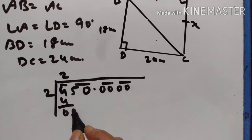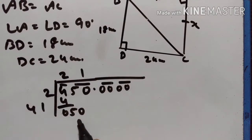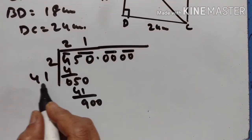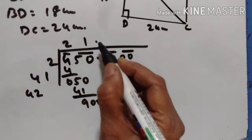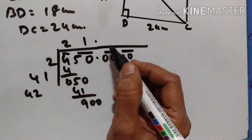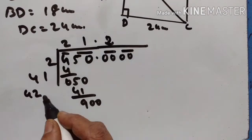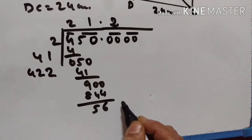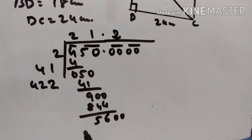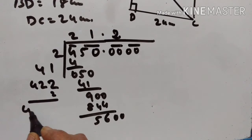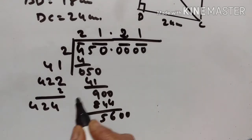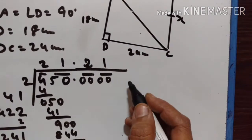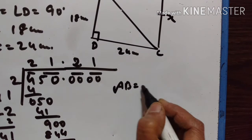Computing the square root of 450 by the long division method, we get 21.21. So AB is equal to 21.21 centimeters.